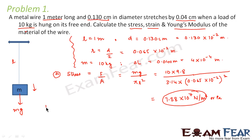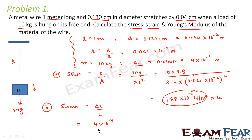Next, we calculate the strain. Strain equals the change in length divided by the original length. The change in length is 4 × 10⁻⁴ meters, and the original length is 1 meter. So the strain equals 4 × 10⁻⁴.